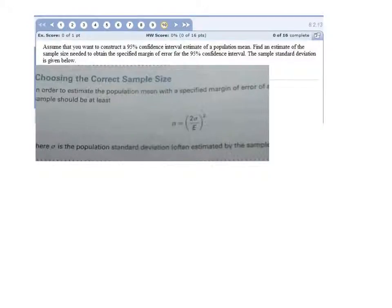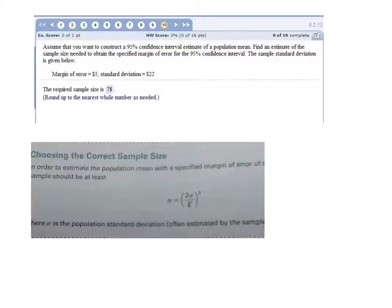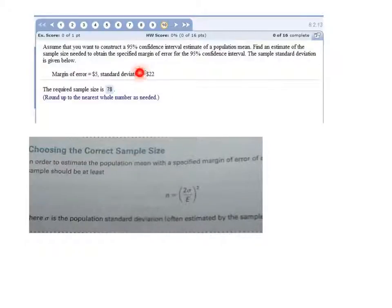Question 10 asks us to find a sample size, and this is about a population mean. Of course, they're telling us that, but because they're also telling me a mean and a standard deviation, that way I know it's about means, not about proportions.